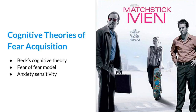In other words, the distorted cognitions related to the source of the anxiety actually keep the anxiety going. The film Matchstick Men is an example of a man who has a variety of distorted thoughts that are maintaining his symptoms of agoraphobia and OCD.